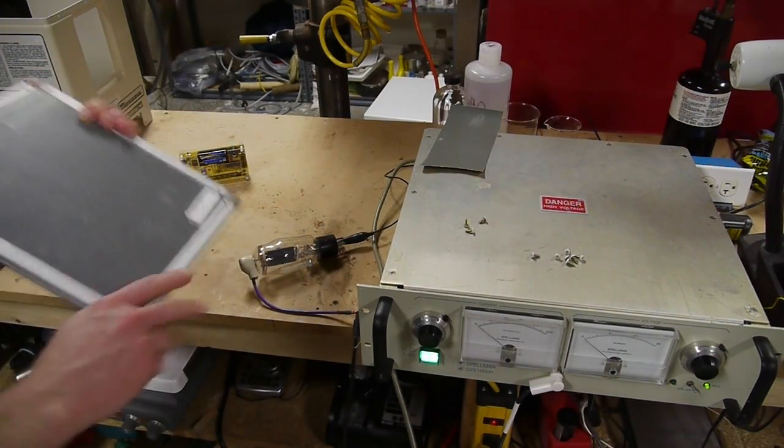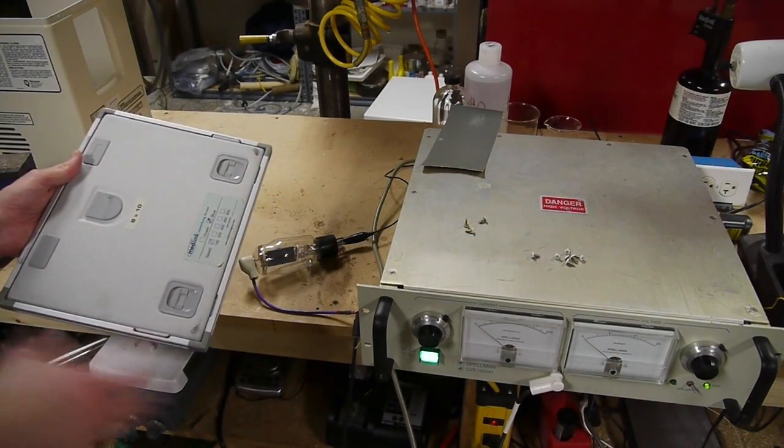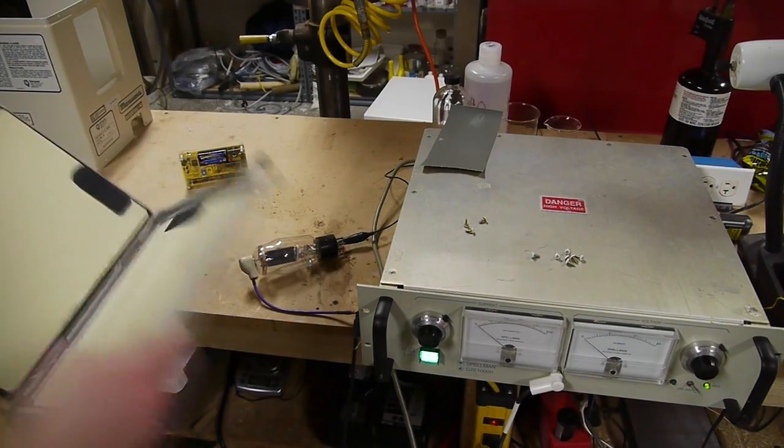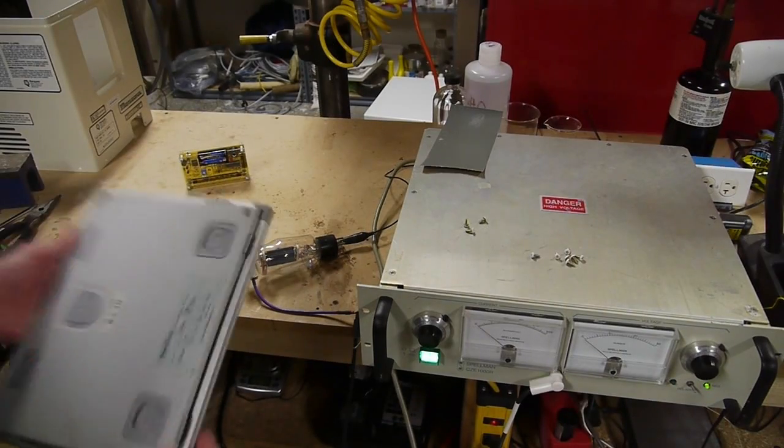Then put this below the patient or whatever and apply the X-rays, and inside here the X-rays will cause the two phosphor screens to fluoresce and expose the black and white film, and then you go back into the dark room and take the film out and develop it.